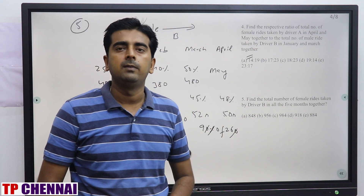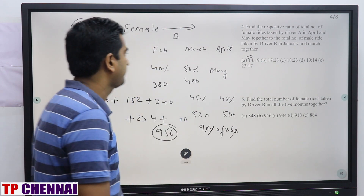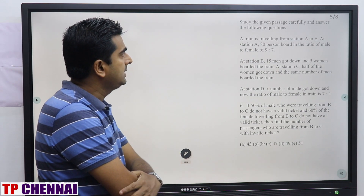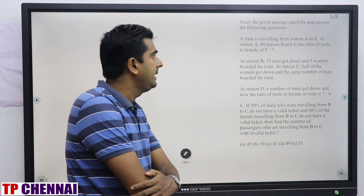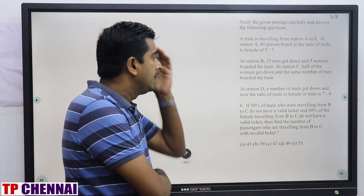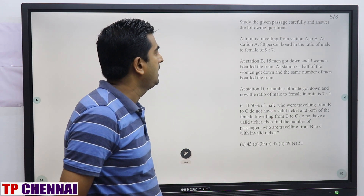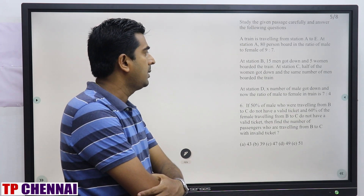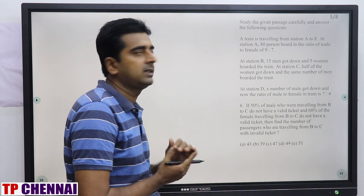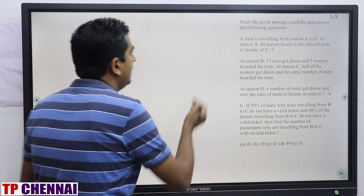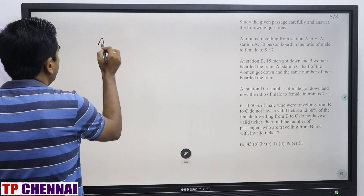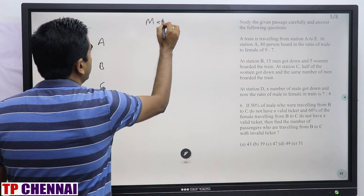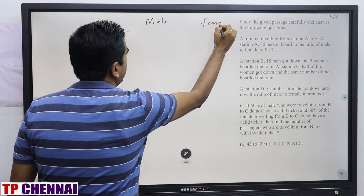Now we will see the case-rate DI which they asked in IBPS RRB PO Mains 2019. Study the given passage carefully and answer the following questions. A train is traveling from station A to E. At station A, 80 persons board with a ratio of male to female of 9:7. At station B, 15 men got down and 5 women boarded. At station C, half of the women got down and the same number of men boarded. At station D, X number of males got down and now the ratio of male to female is 7:4.